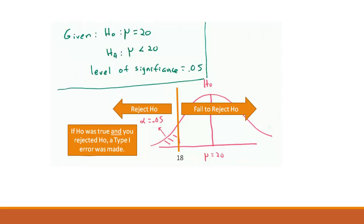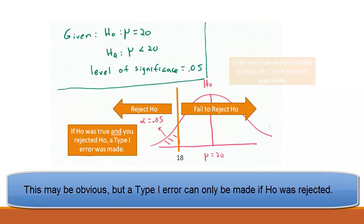So if HO really is true, if the mean is 20 and we did reject HO, we'd be wrong because HO was true but we rejected it and that would be a type 1 error and the probability of that is the alpha, the .05. And if HO was true and we failed to reject HO, then we didn't make an error.